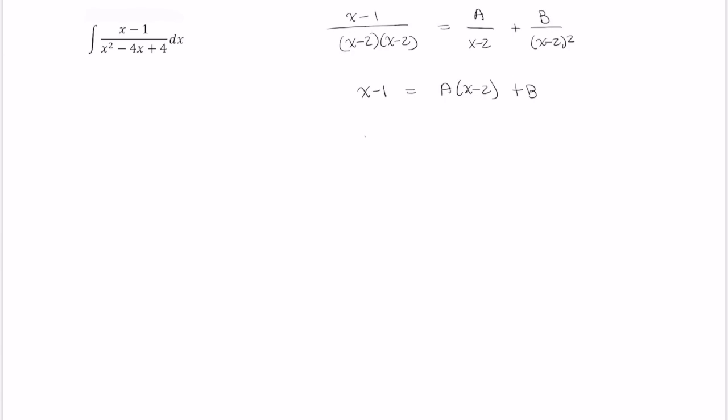Now, continue to simplify. From this, we can clearly see that x has to equal Ax, and negative 1 has to equal negative 2A plus B.